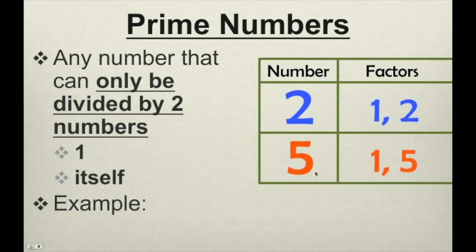That makes these numbers prime, because they only have two factors, 1 and themselves. Here it's 1 and 5, and for 2, it's 1 and 2.